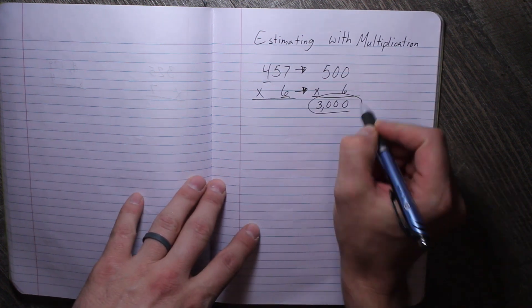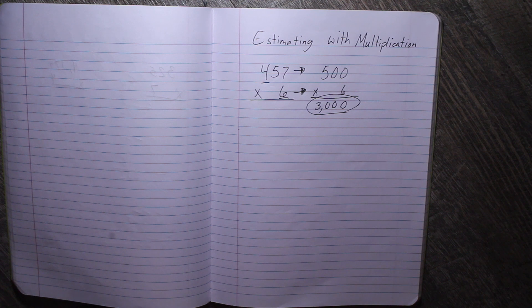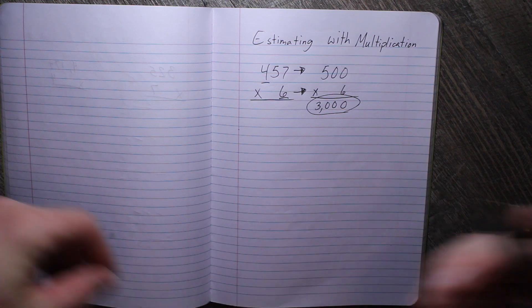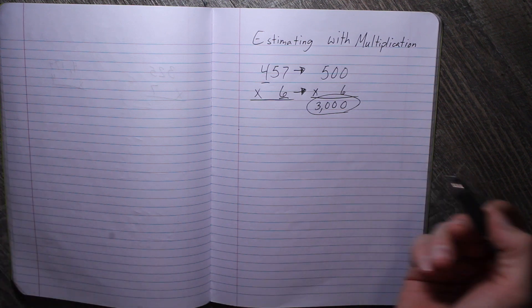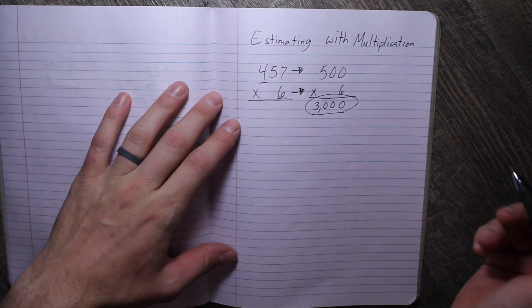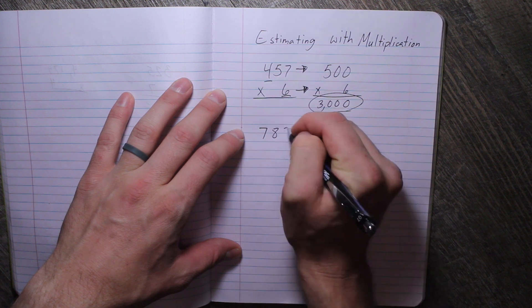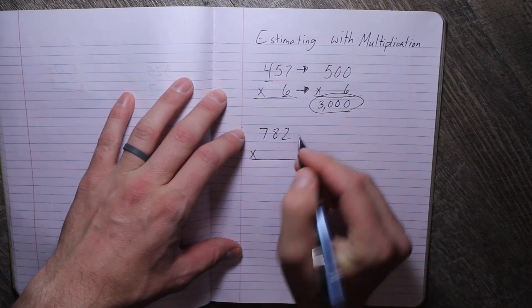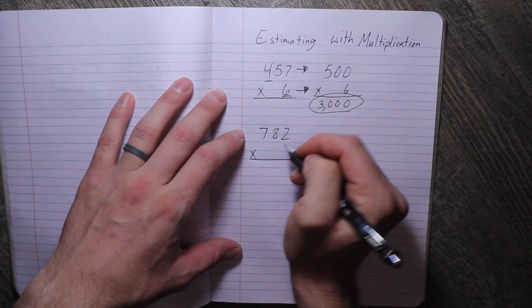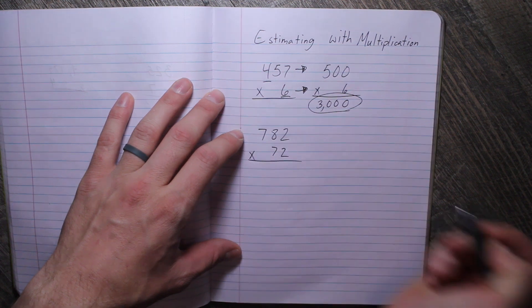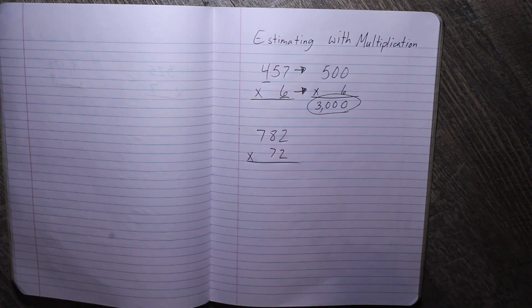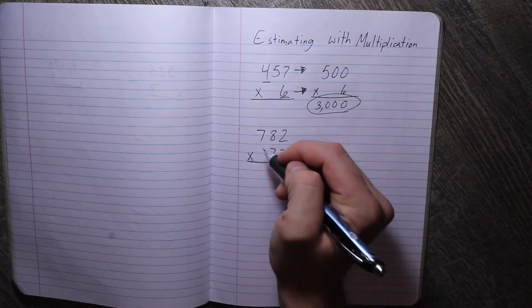So that is how we can estimate with multiplication. But let's say we have a three digit by two digit number. What is that going to look like? So let's look at this. Let's take 782 times, let's say 72. There we go. So let's round again to the largest place value of each of the factors.